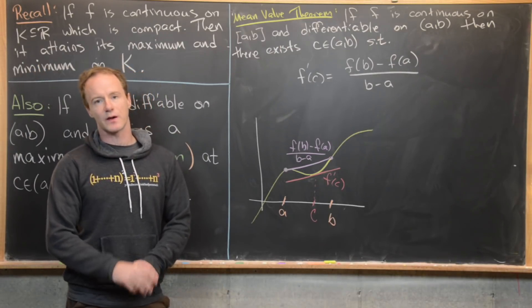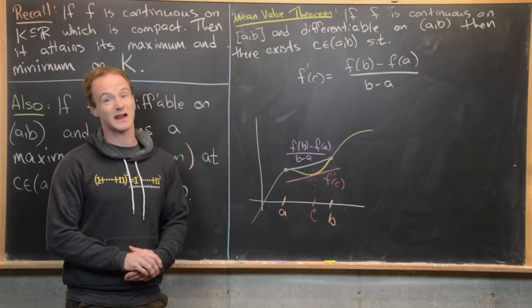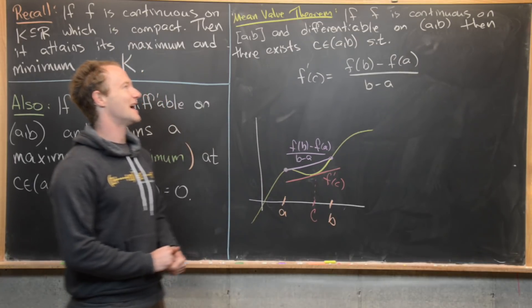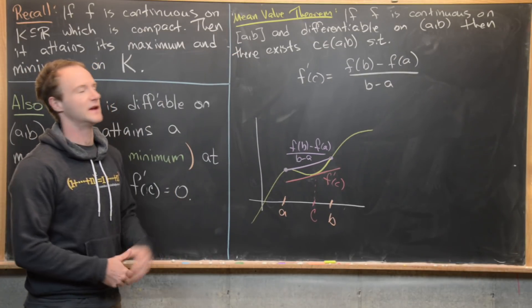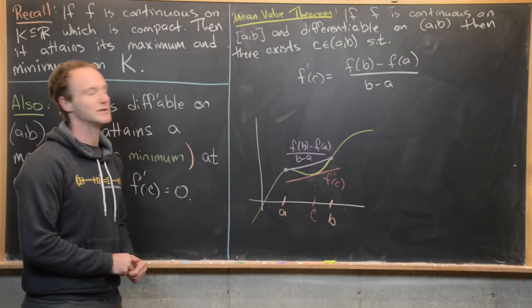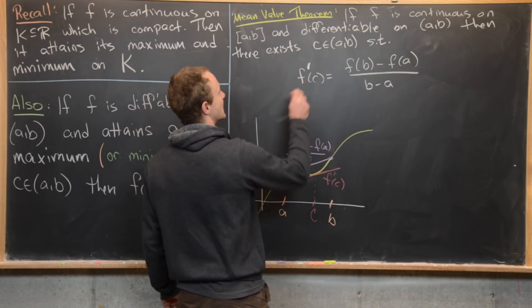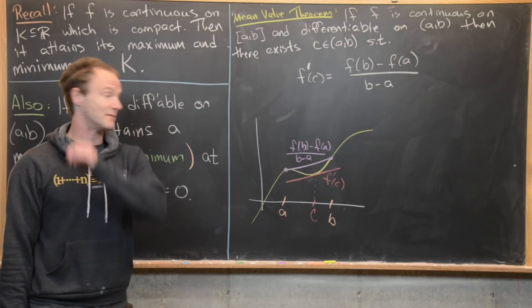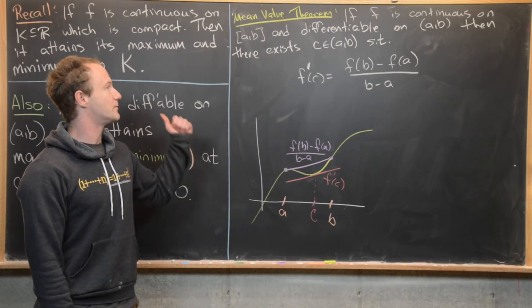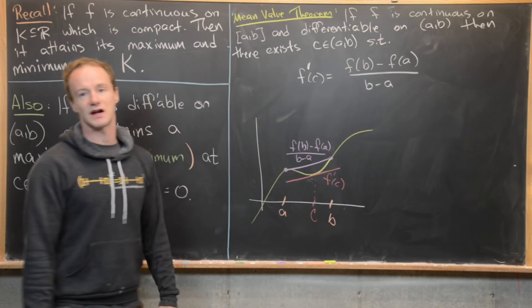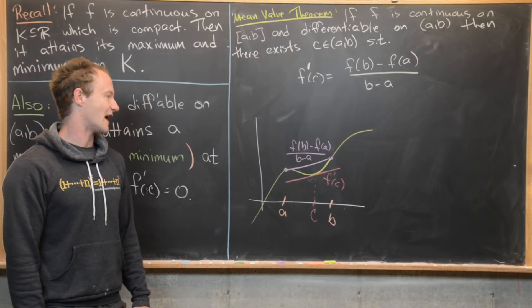Now that we've proved Rolle's theorem, which is really a preparatory result, let's look at the mean value theorem. This is a classic result you probably saw in Calculus 1. It says that if F is continuous on the closed interval [a, b] and differentiable on the open interval (a, b), then there exists a C between a and b such that F prime of C equals F of b minus F of a, all over b minus a. In other words, there is a place between a and b where the instantaneous rate of change equals the average rate of change.